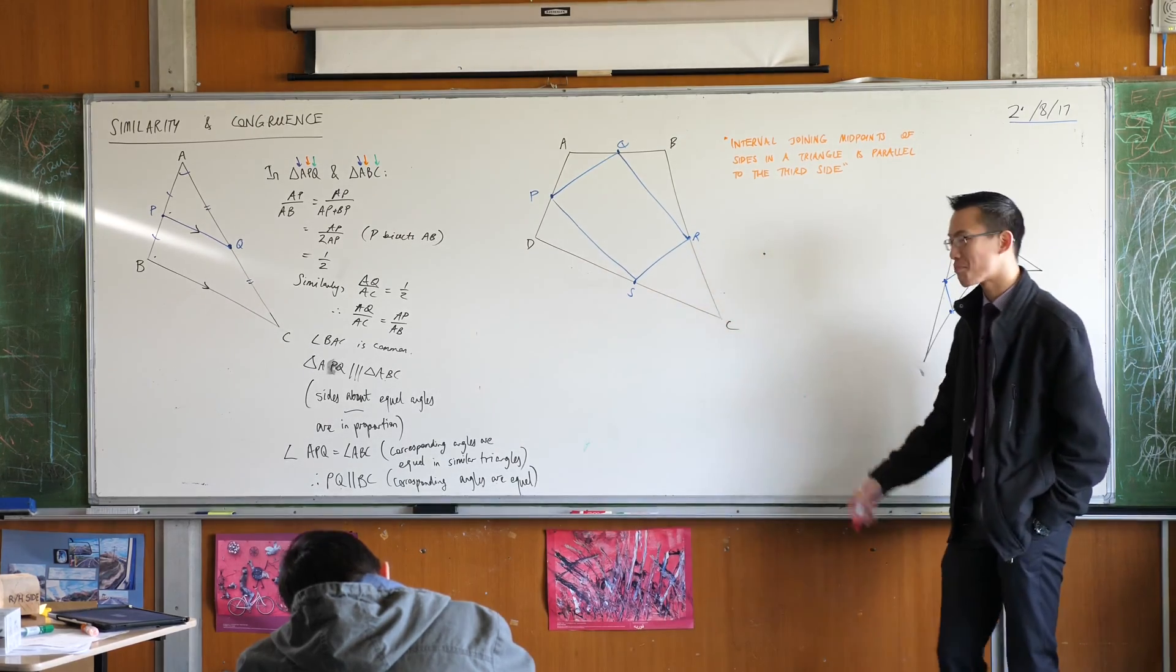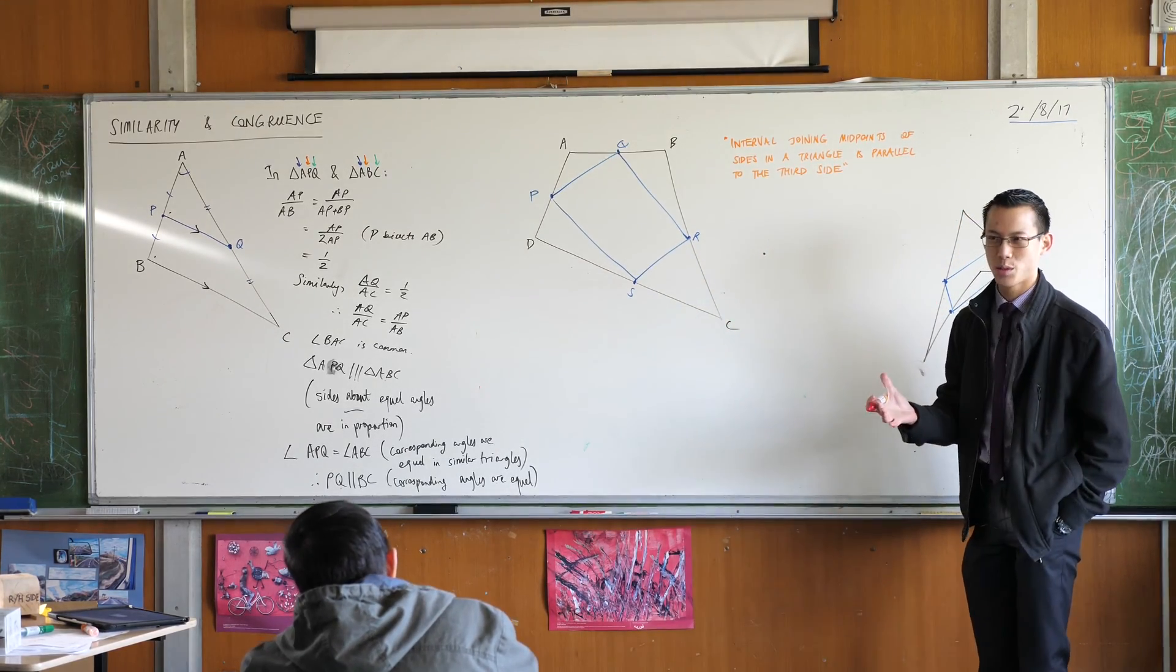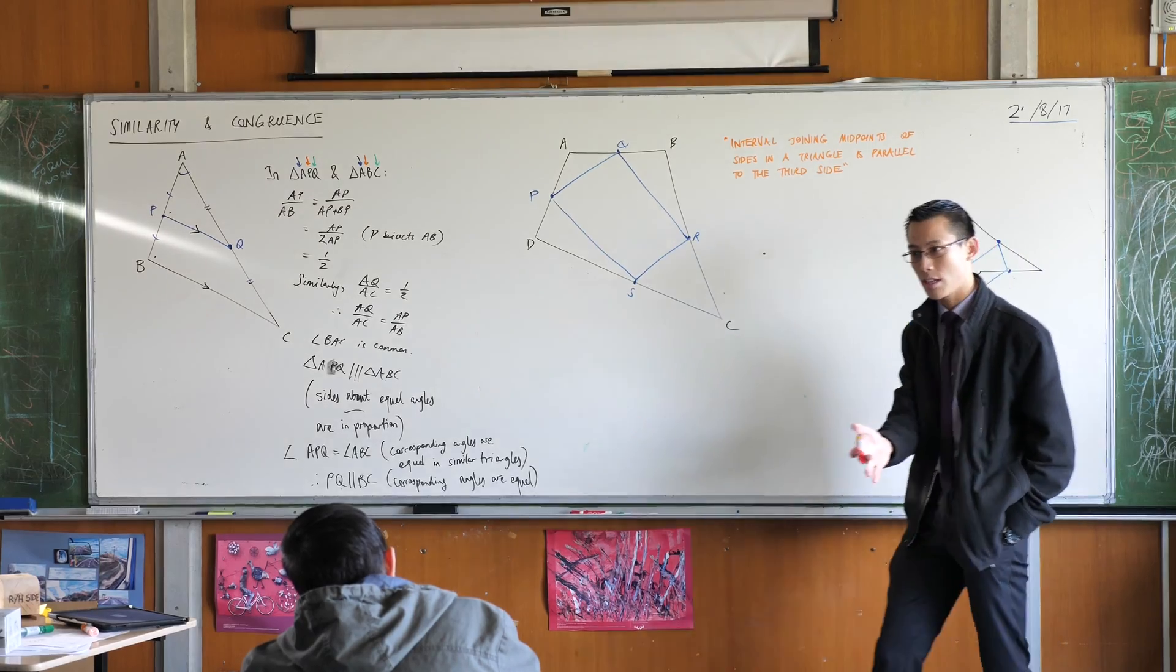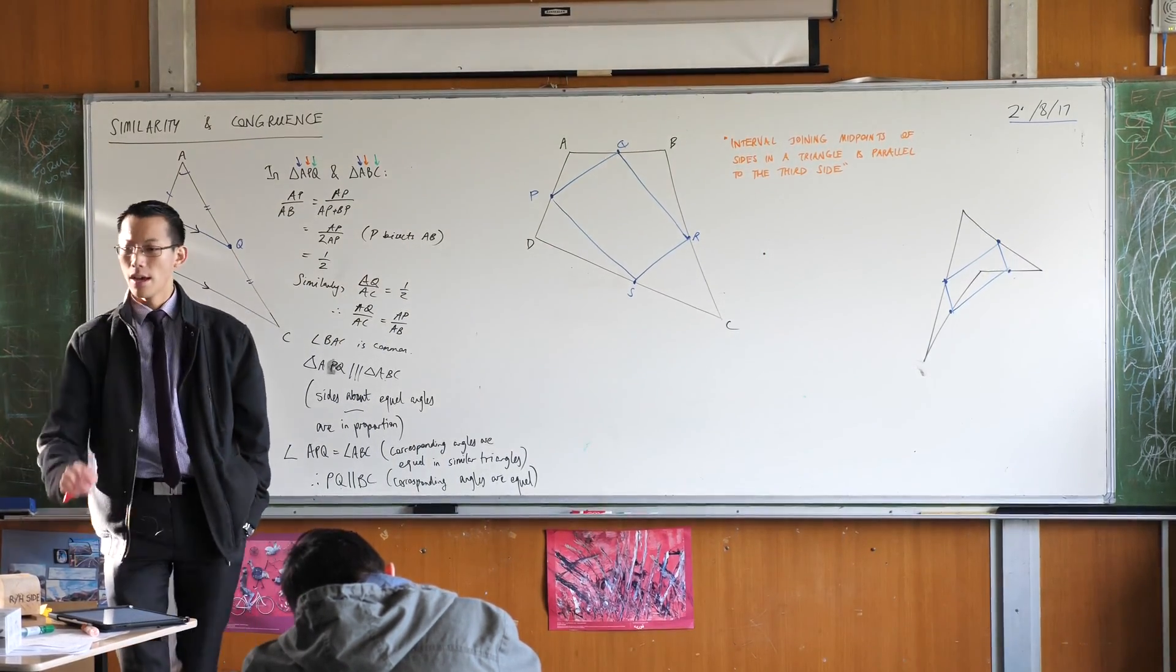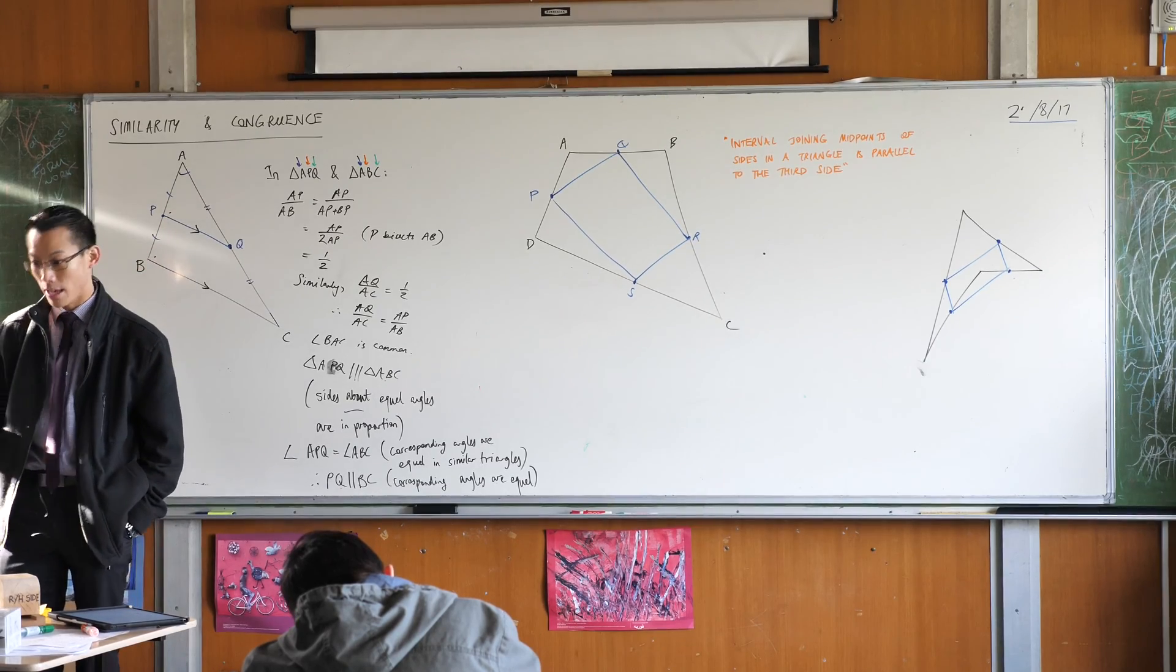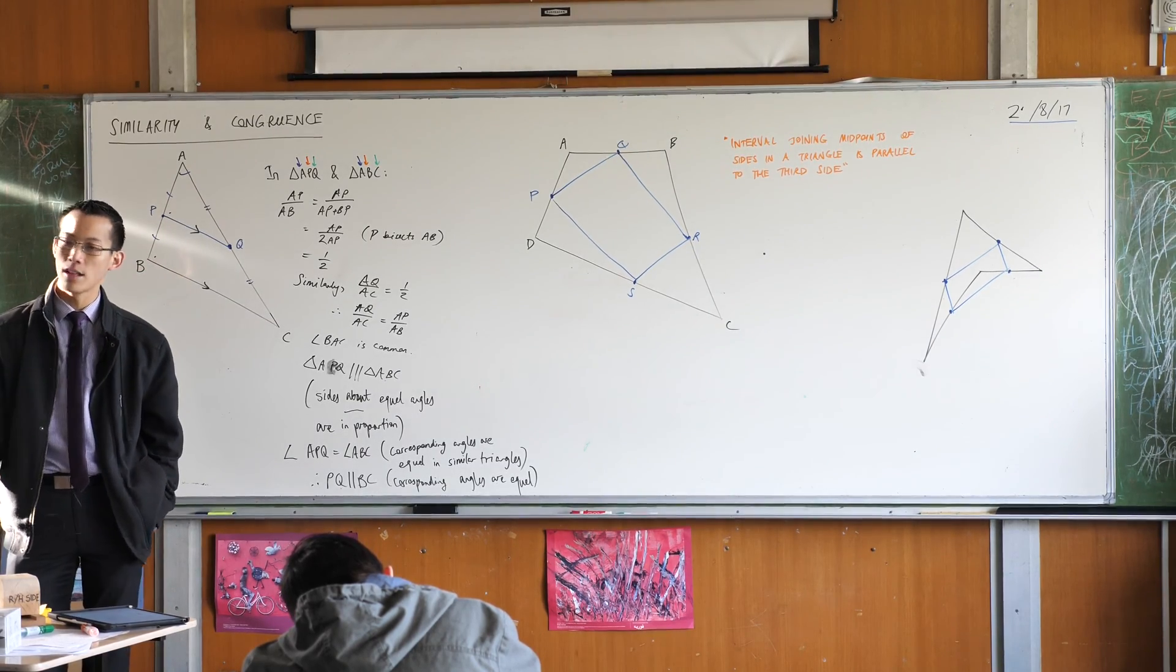I'm going to join up the diagonals of our original quadrilateral. Can you see them there? Look at your original shape, the original four-sided figure that you drew. I want you to look at the diagonals there. Get your ruler out and join them up with another colour if you can.